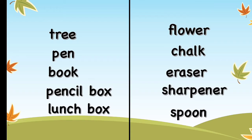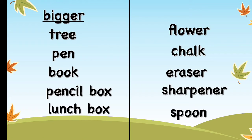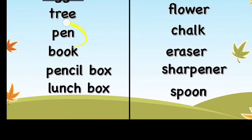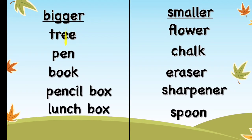Now let us compare these two, to see which one is bigger and which one is smaller. We can see that a tree is bigger than a flower, and a flower is smaller than a tree.